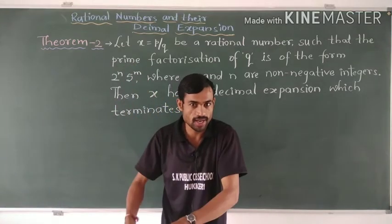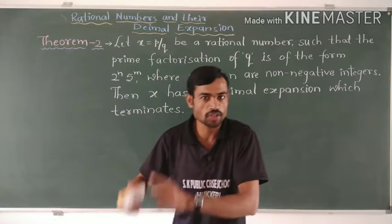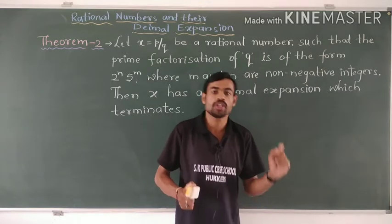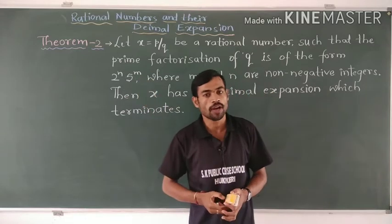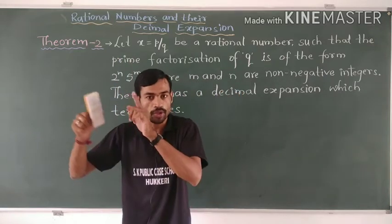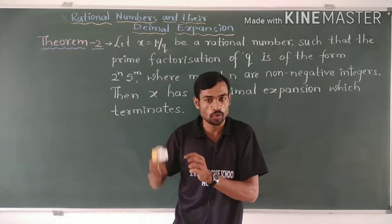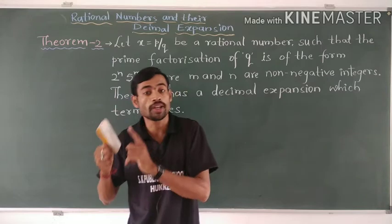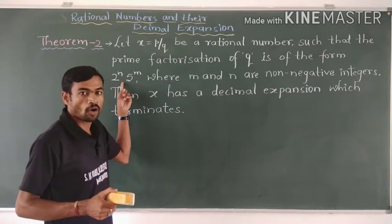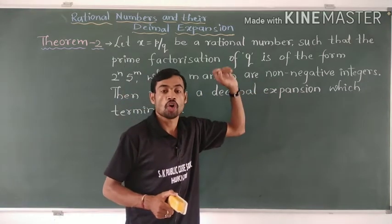In Theorem 1, what is given? x is a rational number expressed in the form P by Q whose decimal expansion terminates. Then what we have to prove is that the prime factorization of Q is of the form 2 to the power n into 5 to the power m. But in the second theorem, what is given? x is a rational number expressible as P by Q, and the prime factorization of Q is of the form 2 to the power n into 5 to the power m, where m and n are non-negative integers.